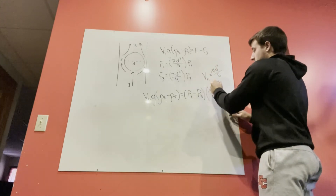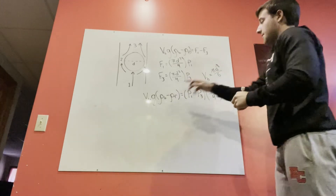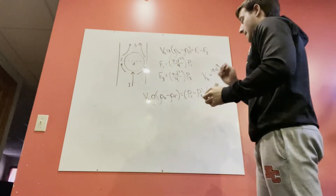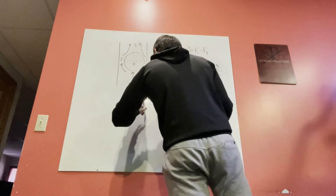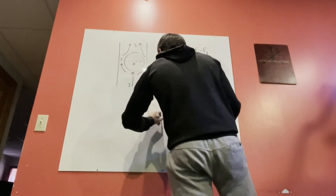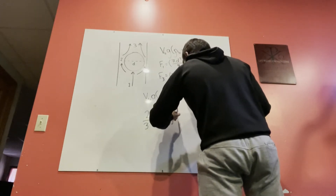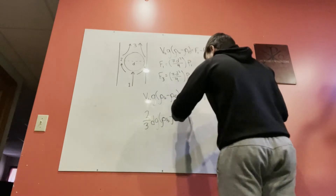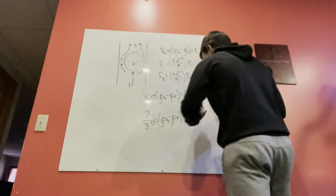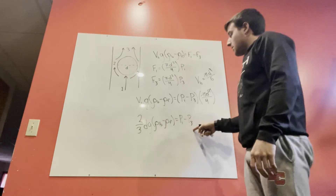The volume of the ball can be written as Vb = π·d³/6. Substituting this in, the π terms cancel, d² cancels leaving one d on the left side, and multiplying by 4 gives the simplified relation: (2/3)·d·g·(ρb − ρf) = P1 − P3.